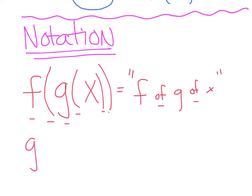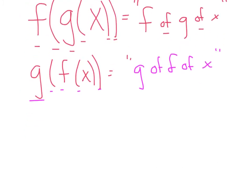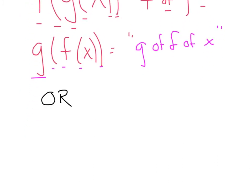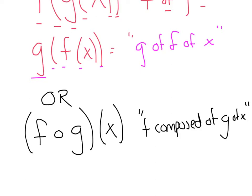Here's another one — how would you read this? G of F of X. You'll either see it written with parentheses, or it can be written with a composition circle sign — they mean the same thing. For example, F composed of G of X. That little circle means 'composed of.' We don't say 'fog' — it's F composed of G of X. Likewise, G composed of F of X.